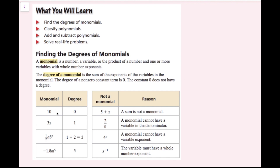The degree of a non-zero constant term is zero. The constant zero does not have a degree. Looking at this table, the monomial 10 is a constant term, so it has a degree of zero.